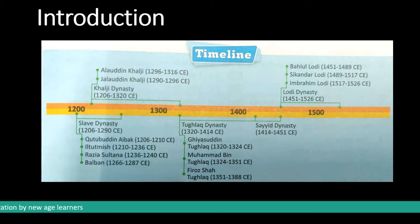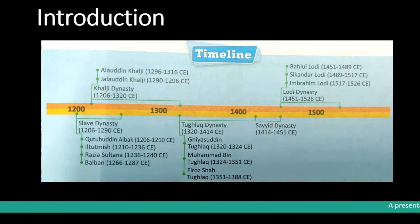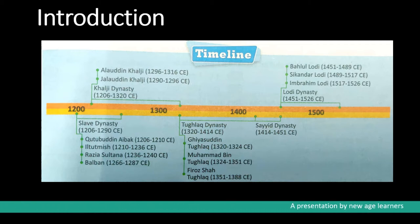These five dynasties began with the slave dynasty, followed by the Khalji dynasty, Tughlaq dynasty, Syed dynasty, and ending with the Lodi dynasty. Let's study about the rise of Delhi Sultanate.